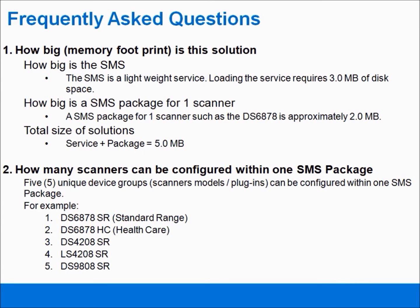Two, how many scanners can be configured within one SMS package? Five scanners can be configured within one SMS package, but they cannot be the same model scanner with the same plugin. For example, you could have the DS6878SR (standard range) and the DS6878HC (healthcare) within one package, but you couldn't have two DS6878SRs within one package.